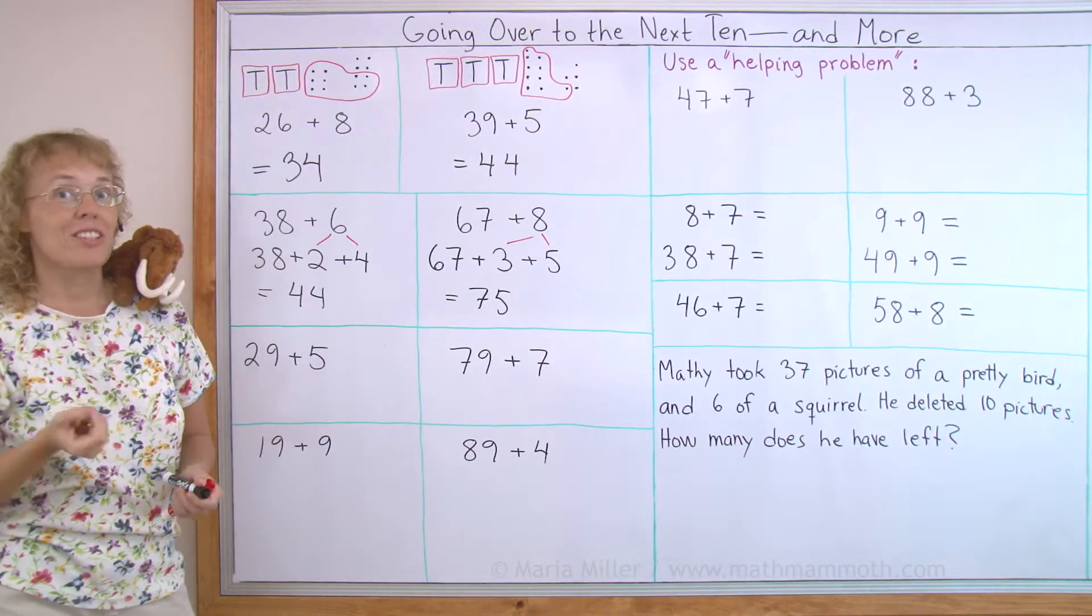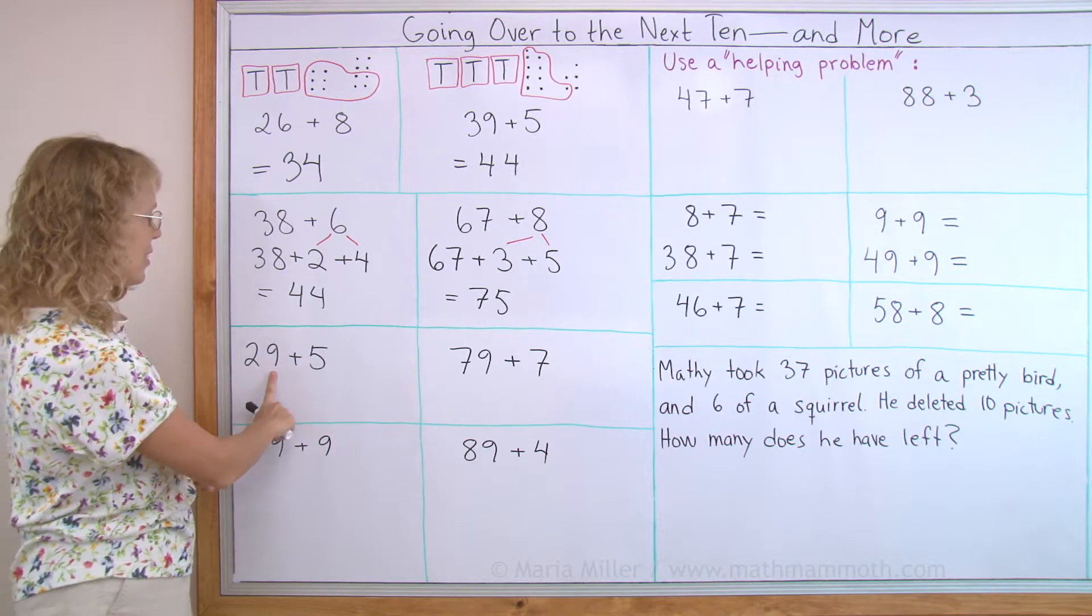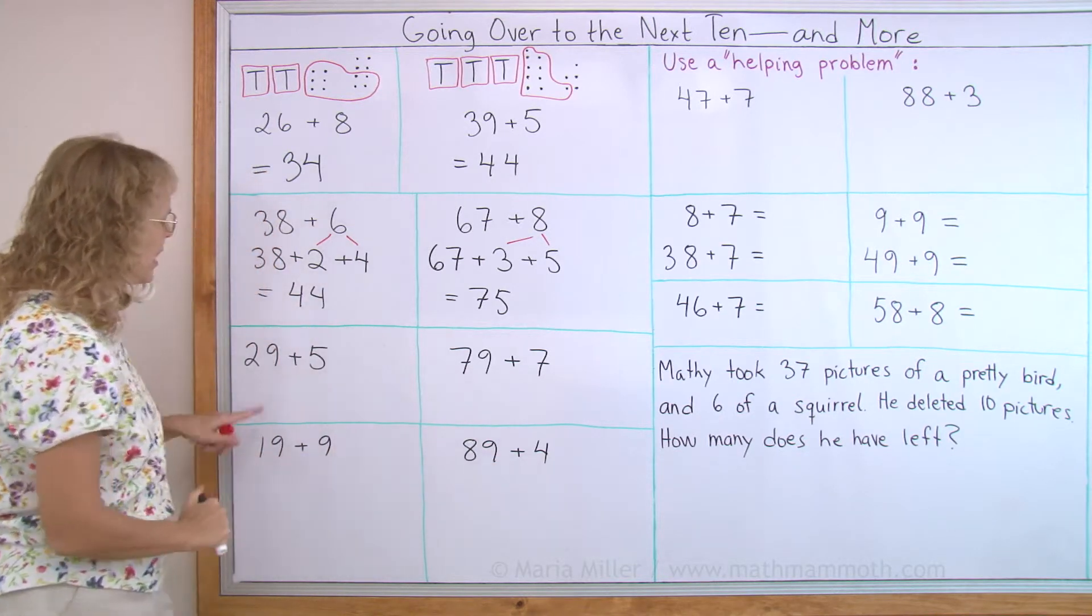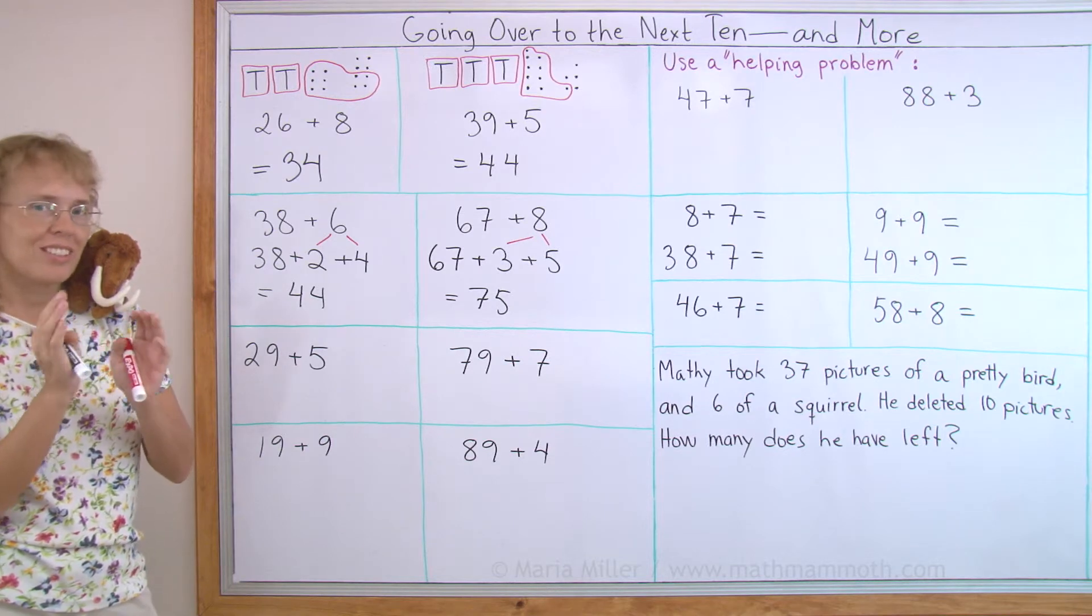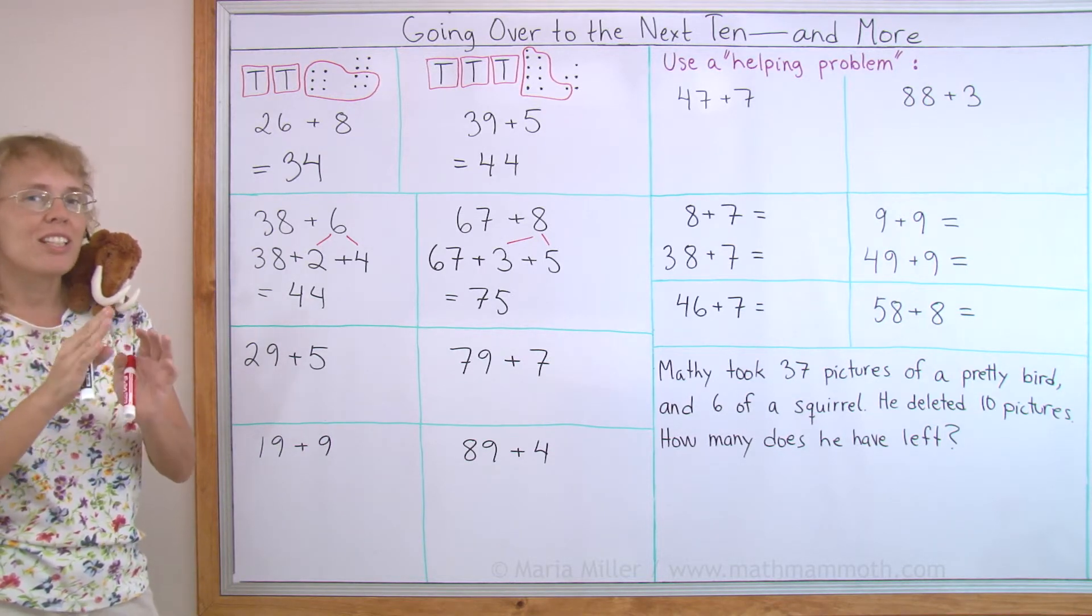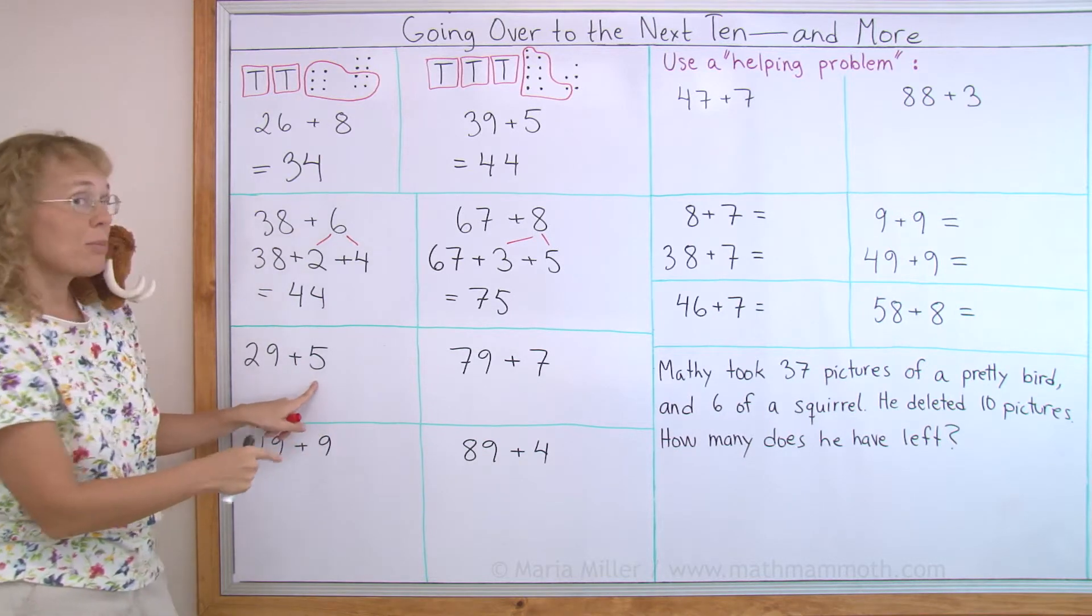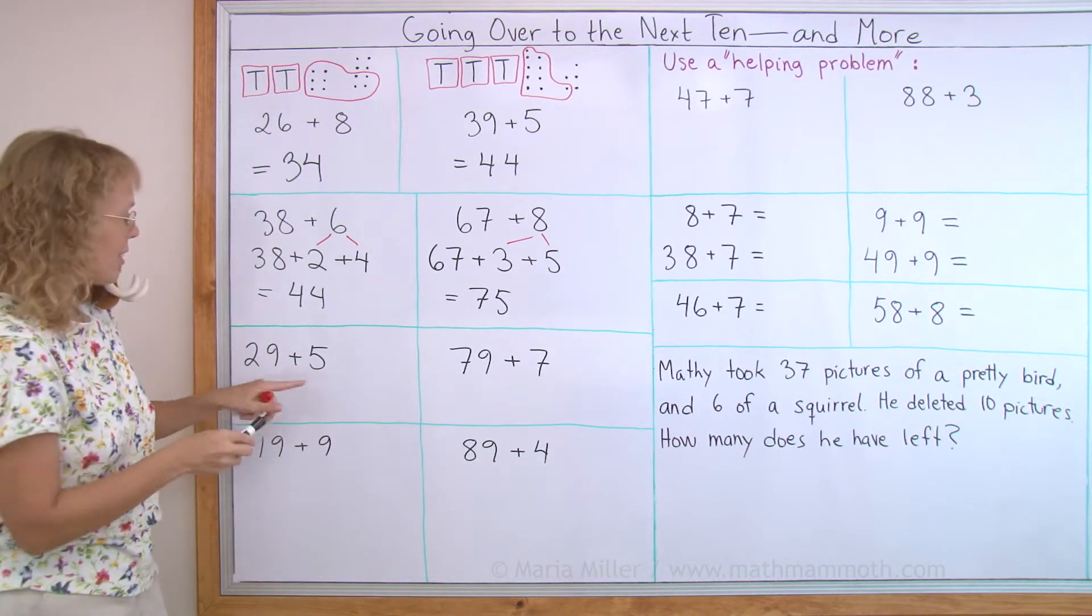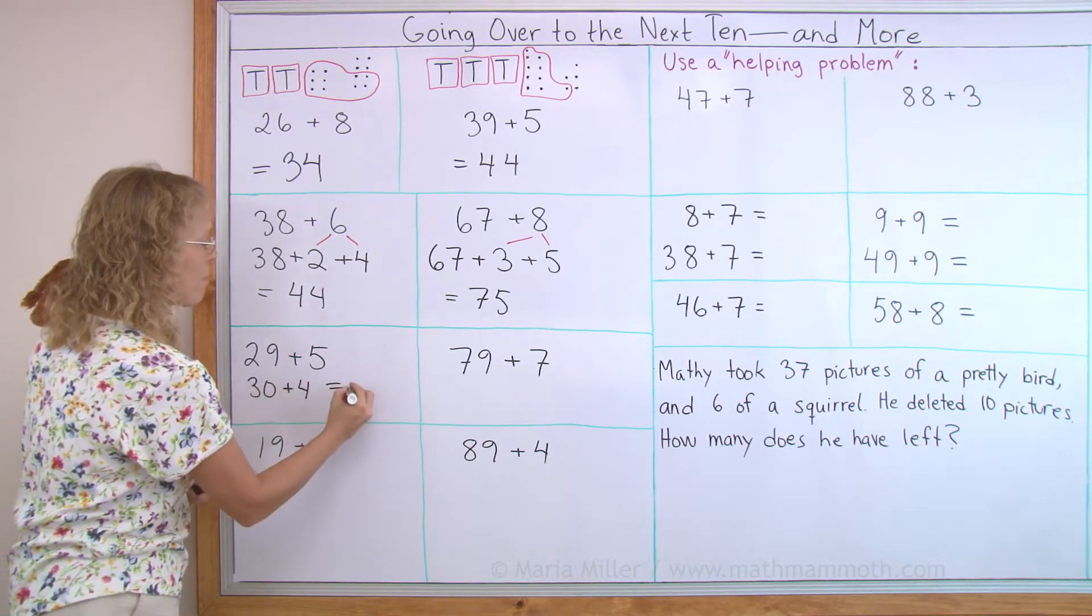With these problems, we are going to use the 9 trick because they all have a two-digit number that ends in 9. 29 plus 5. 29 wants to be 30. Basically you are filling up the next 10. And so 5 becomes 4, one less. So this addition becomes 30 plus 4, which is 34.